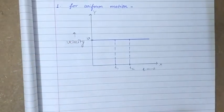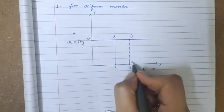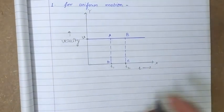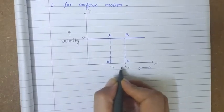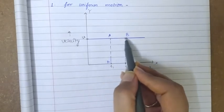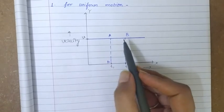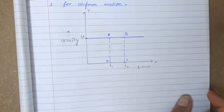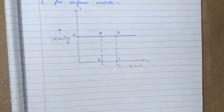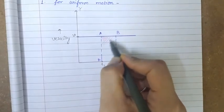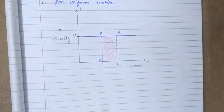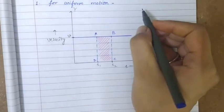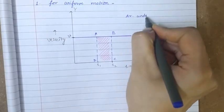If I plot lines for time t1 and t2, I get a rectangle ABCD under the graph. Between time instants t1 and t2, the velocity of the moving object is v, denoted by line AB. Now I am trying to find the area under this velocity-time graph between times t1 and t2. This shaded region is a rectangle, and the area of a rectangle is length multiplied by breadth.